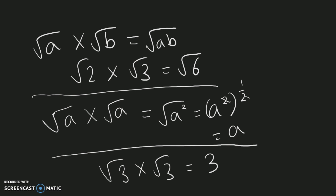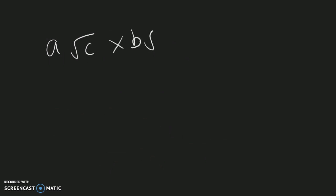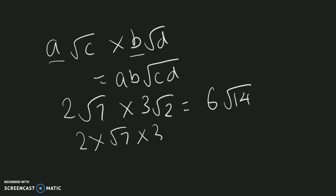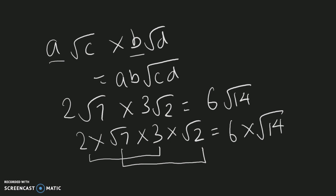Next, something a bit more complex: if 'a' root 'c' is multiplied by 'b' root 'd', the values outside the square roots are multiplied together and the values inside are multiplied together, giving ab root cd. For example, two root seven multiplied by three root two equals six root fourteen. The two and three join to make six, and the square root of seven times the square root of two gives the square root of fourteen, so the result is six root fourteen.